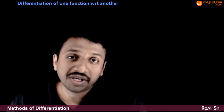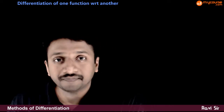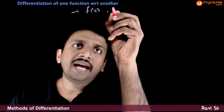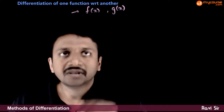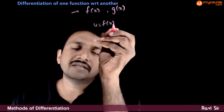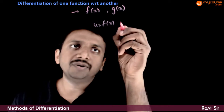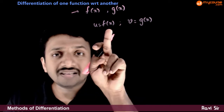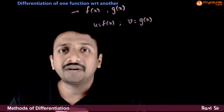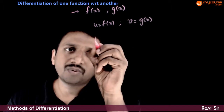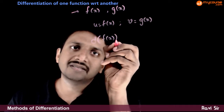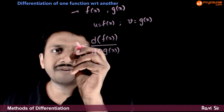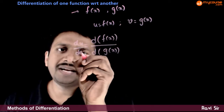Let us try to understand how to differentiate one function with respect to another function. If f of x is a function and g of x is a function, let us say u is equal to f of x and v is equal to g of x. What is the differentiation of f of x with respect to g of x? That is, what is d of f of x by d of g of x? All this can be thought of as d of u by d of v.